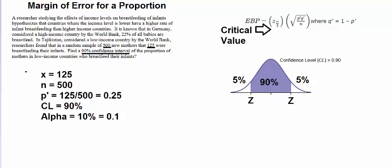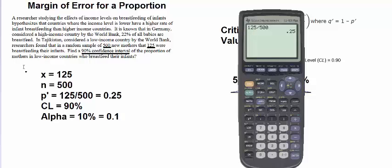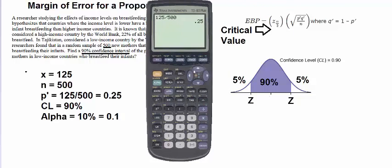So let's pull out our calculator again. Go to distro. Go to inverse norm. We want 5% for something that is normally distributed. So let's say we are working with 1.64 as our critical value here.